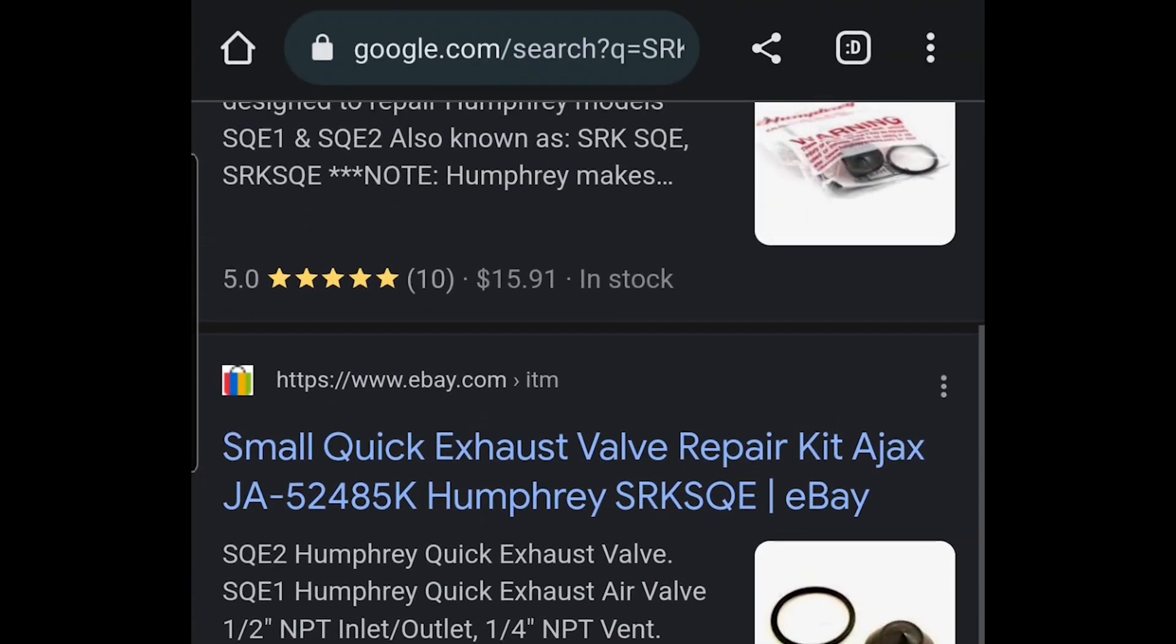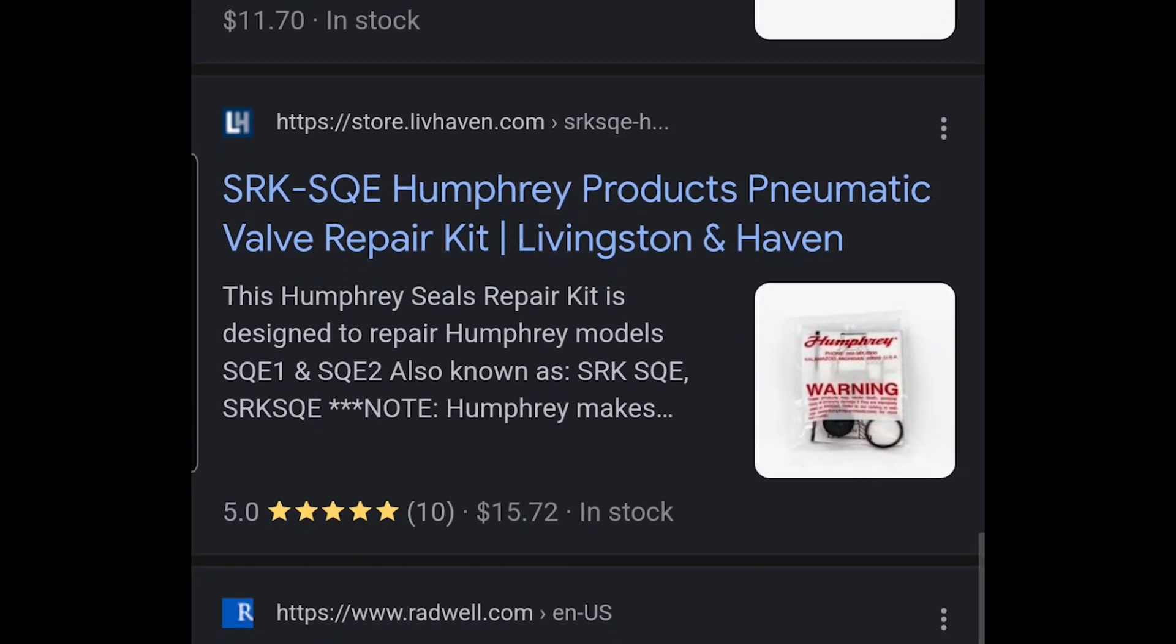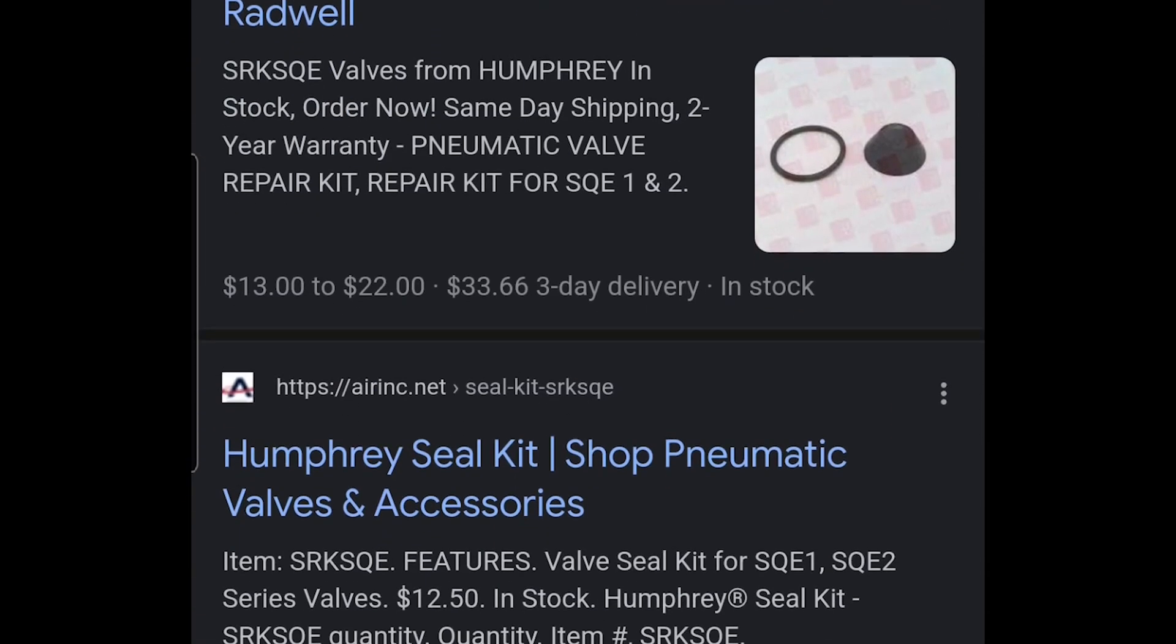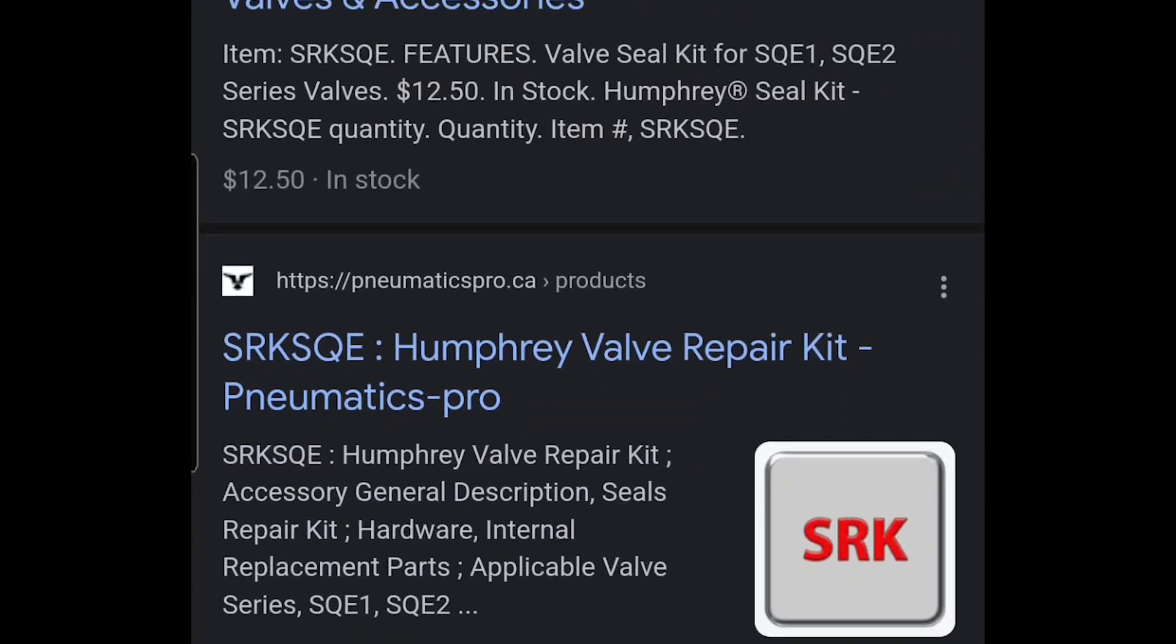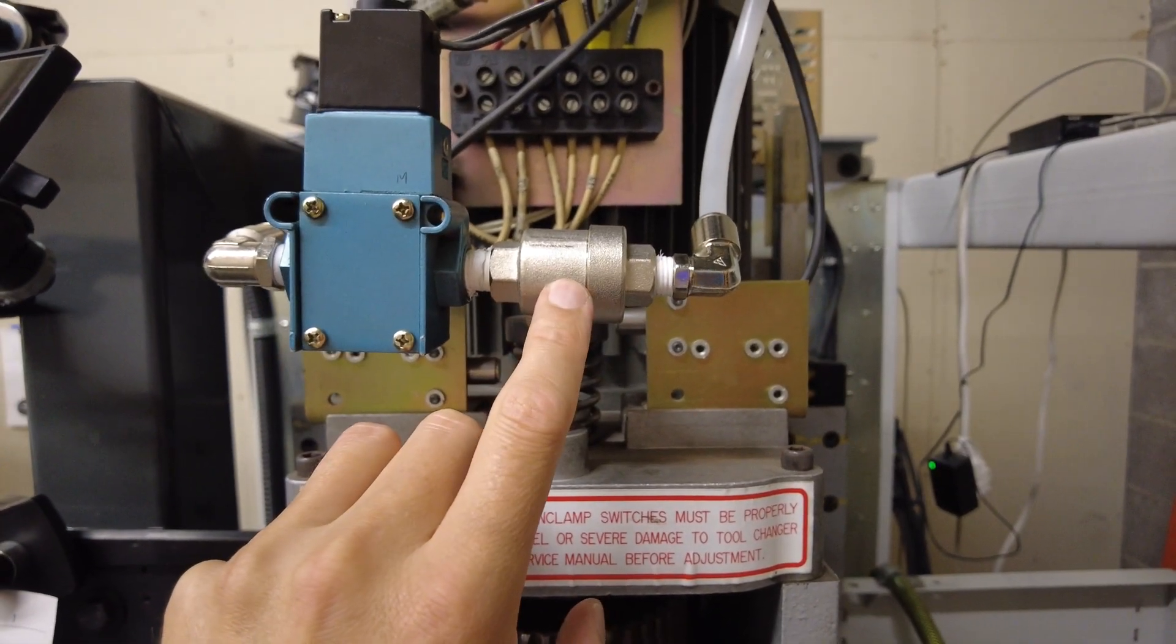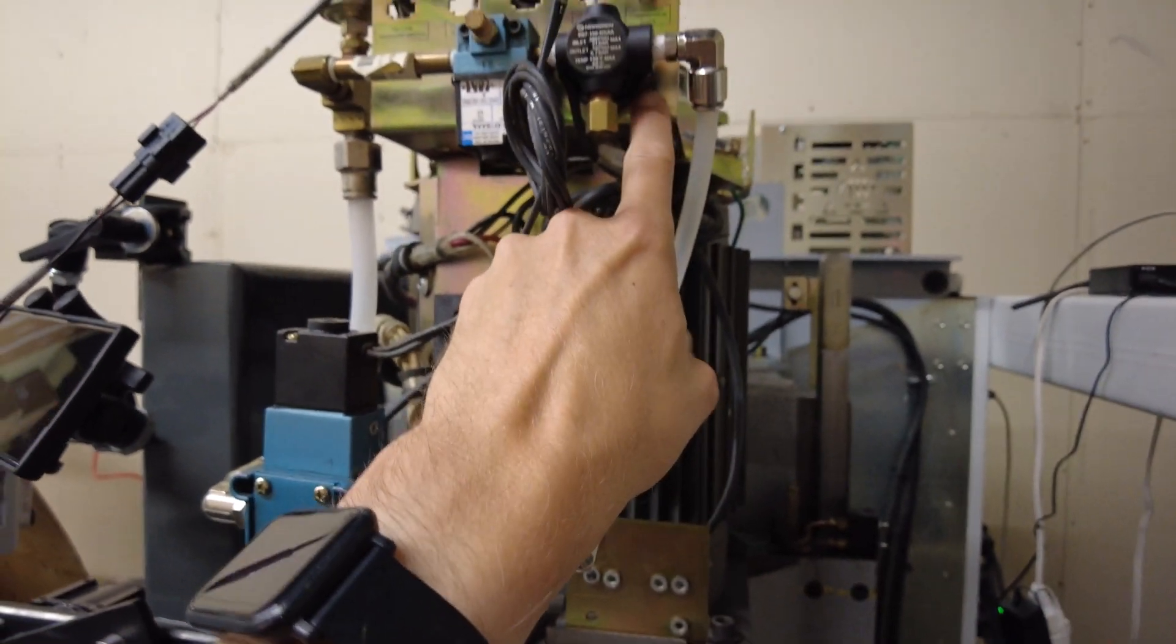That's only a few dollars cheaper than buying the whole valve, so it's not really a great deal. It's almost better to just buy the whole thing for $19. Here's the replacement Legree super quick exhaust valve. I installed it and it works great. There's no more air leaking out of the low pressure regulator, and the tool release is working much better, just like it should.